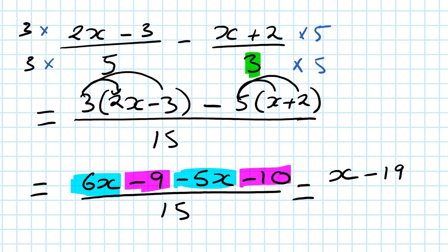Now collect like terms: 6x minus 5x is x, and then the constants. Remember it's about the process — so long as you know the process, you're allowed to use your calculator. That's the answer for this one.